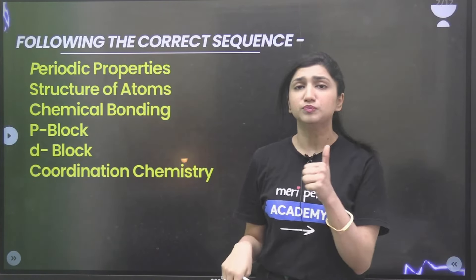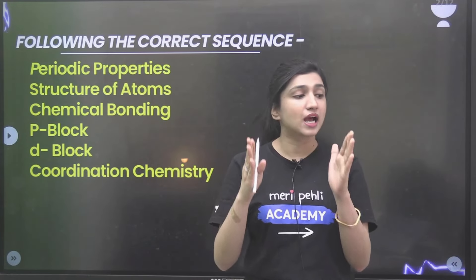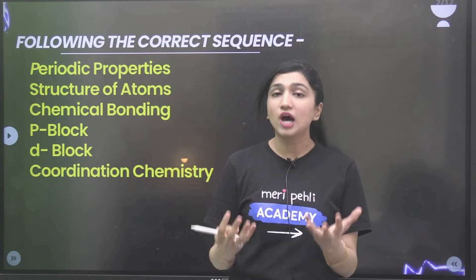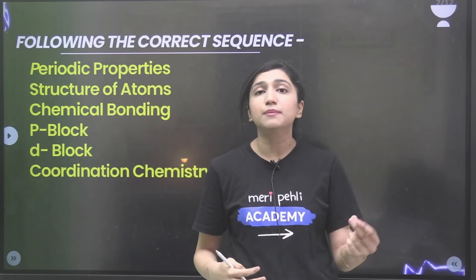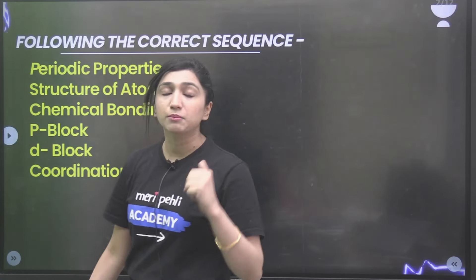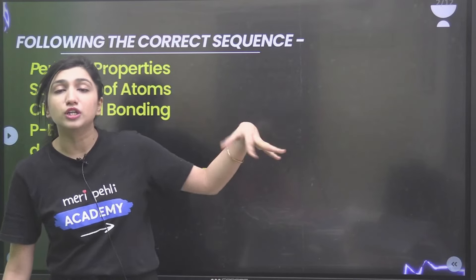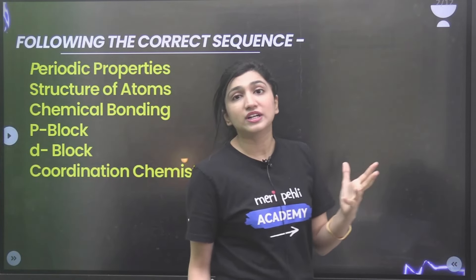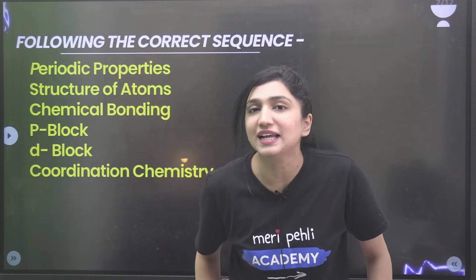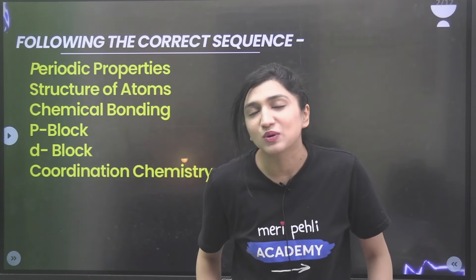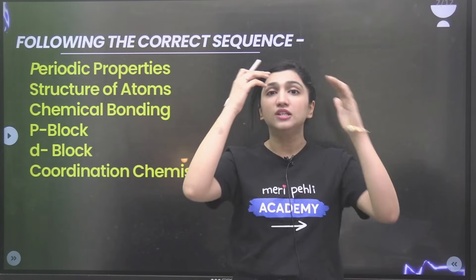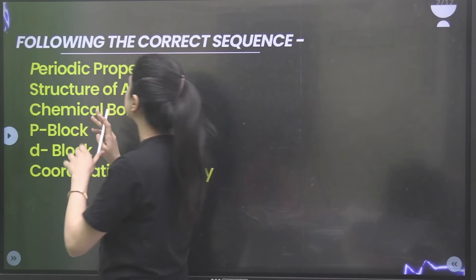The most important thing is that you follow the correct sequence of units. In inorganic chemistry, don't jump straight to class 12. You might feel that class 12 units are more important — P-block and coordination chemistry are very high-weightage — so you start from class 12. But you don't have to do that, because the units are connected: until you get the foundation topics, you will not understand the later ones.